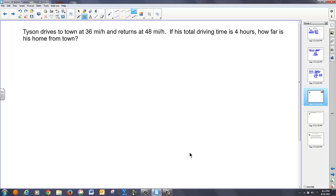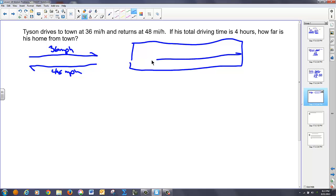So, in this problem, we have this guy Tyson driving to town at 36 miles an hour and then turning around and going back 48 miles an hour. We know his total driving time is 4 hours. So, if I were to take and fill out a chart, once again, distance equal to the rate times the time. My rate is 36 and 48. Call that there and back.